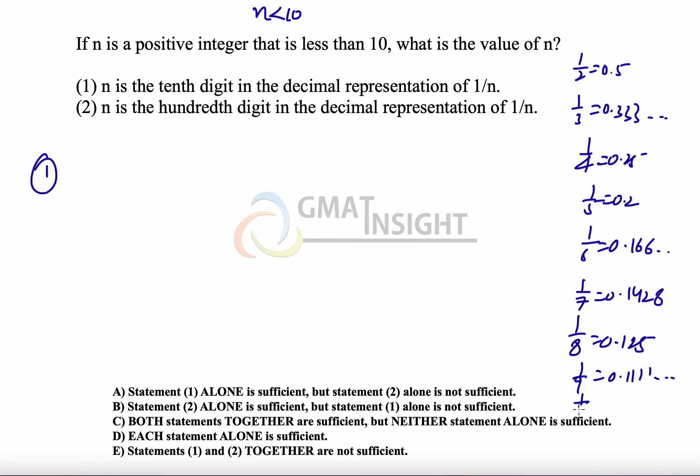And 1 upon 10 becomes 0.1. We have to go up to 9 only because the question says n is less than 10. The 10th digit, now we need to understand if we have a number of the form a, b, c dot d, e, f, then d is called the 10th digit, e is called the 100th digit.